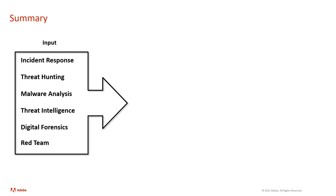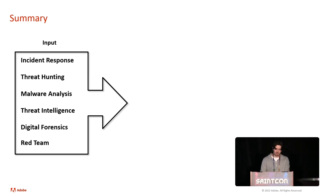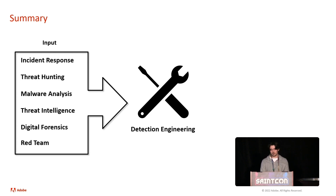Just to summarize this — what detection engineering takes as input and what is output from this process. In the input, we have internal research along with all these different teams — IR, DFIR, threat hunting, malware analysis, threat intelligence — that provide content we can build off of. These also contribute to the organization's security posture. We take all that content, apply detection engineering and this process to it, refining, adjusting, and improving the inputs from these different teams. We take that raw data and insight and we're transforming these into actionable security measures.